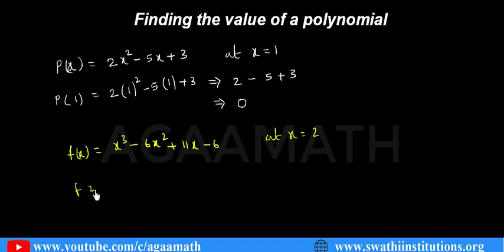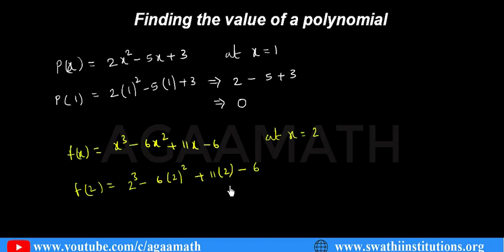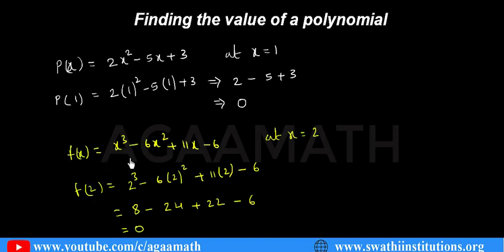So f of 2: in the place of x we take 2. That gives 2 cubed minus 6 of 2 squared plus 11 of 2 minus 6. Now 2 cubed is 8, 2 squared is 4, so 6 into 4 is 24, and 11 into 2 is 22. So 8 minus 24 plus 22 minus 6, which gives 0. The value of this polynomial at x equals to 2 is 0.